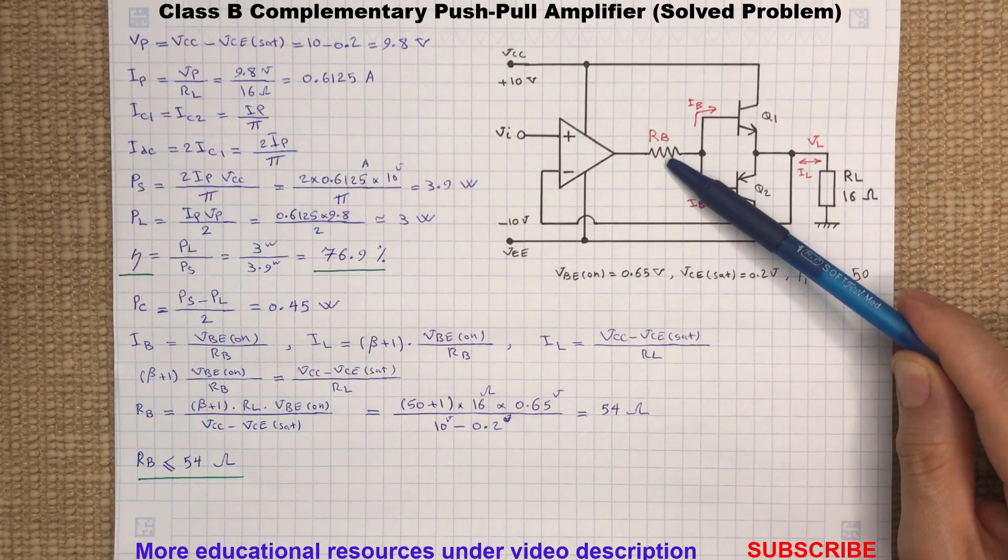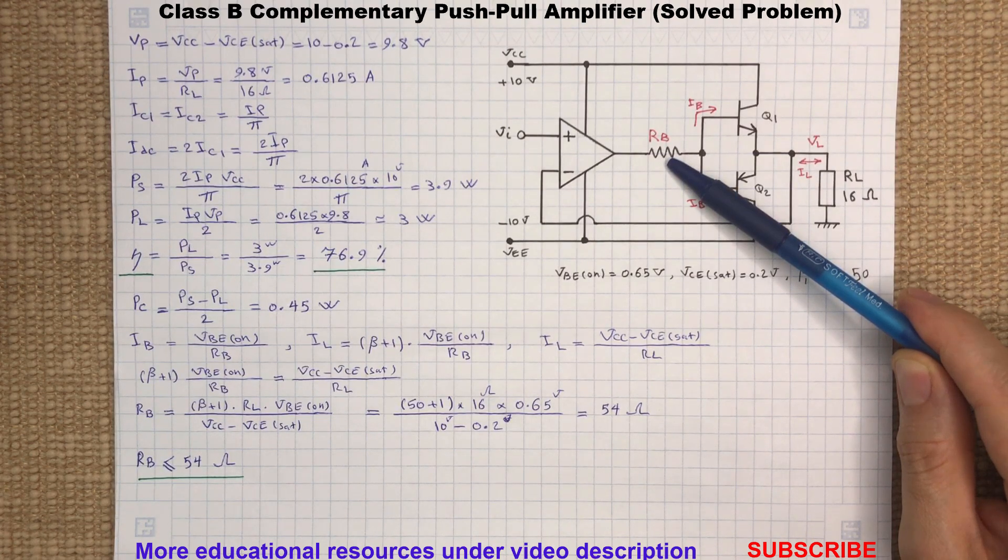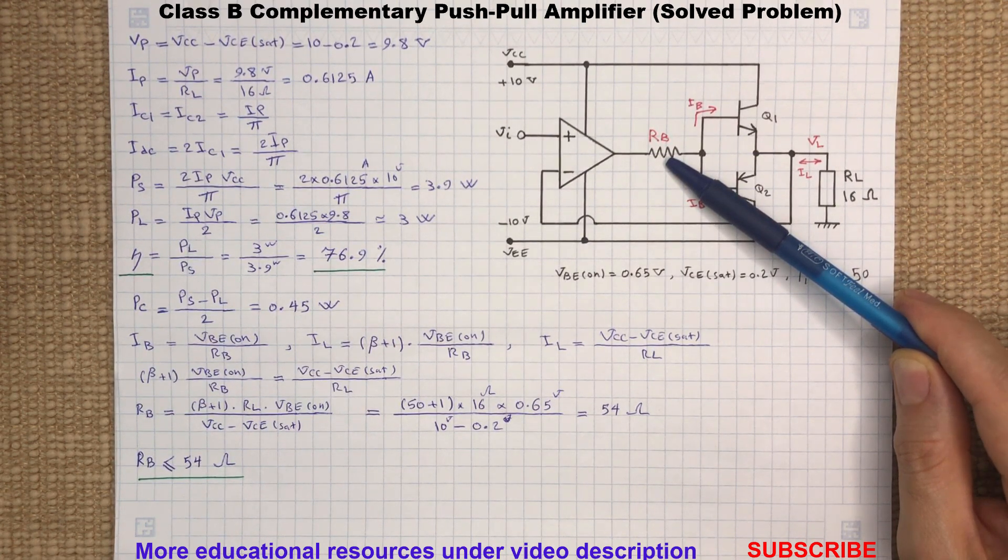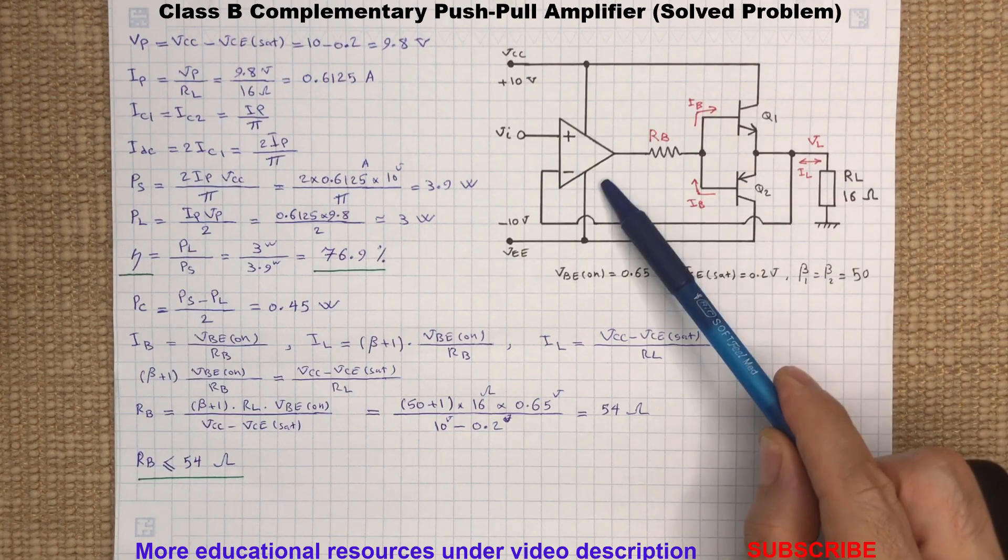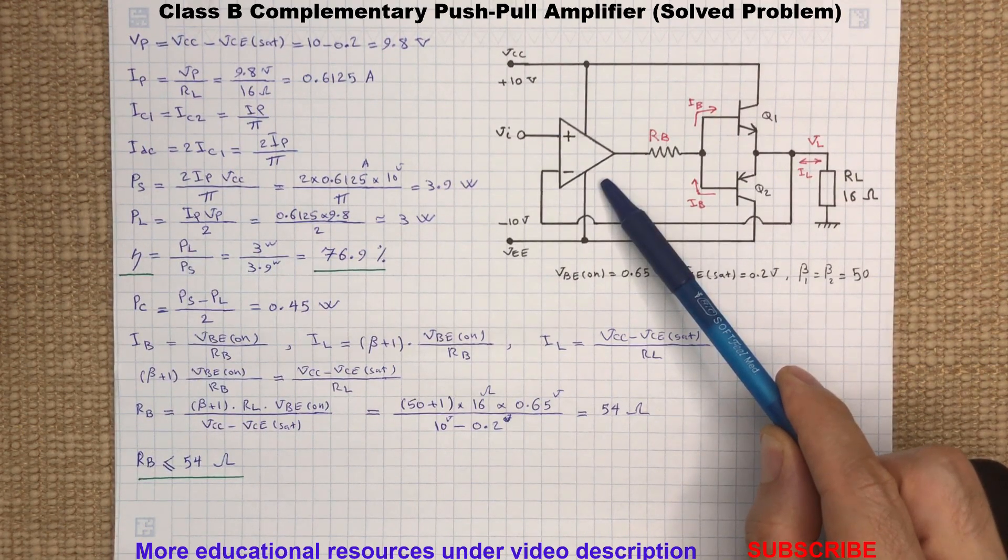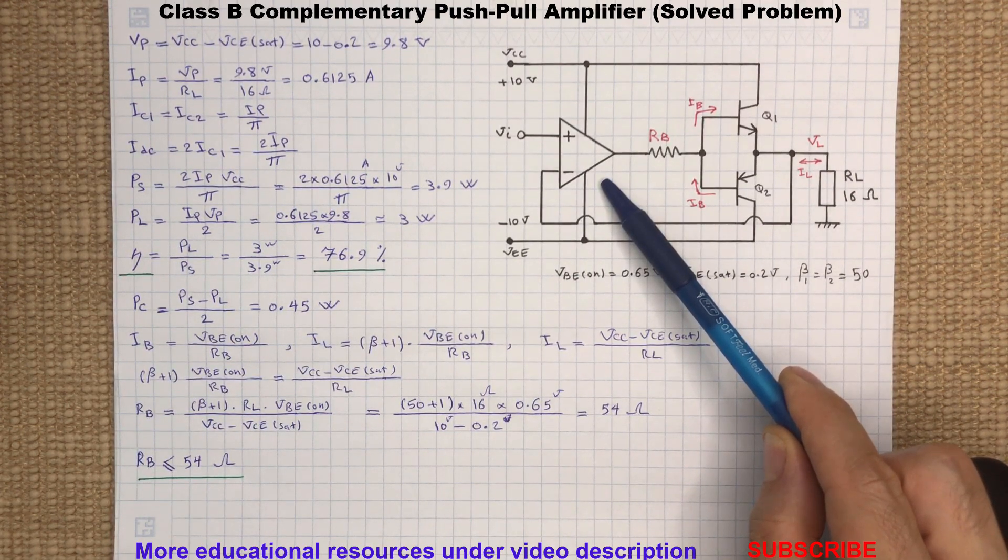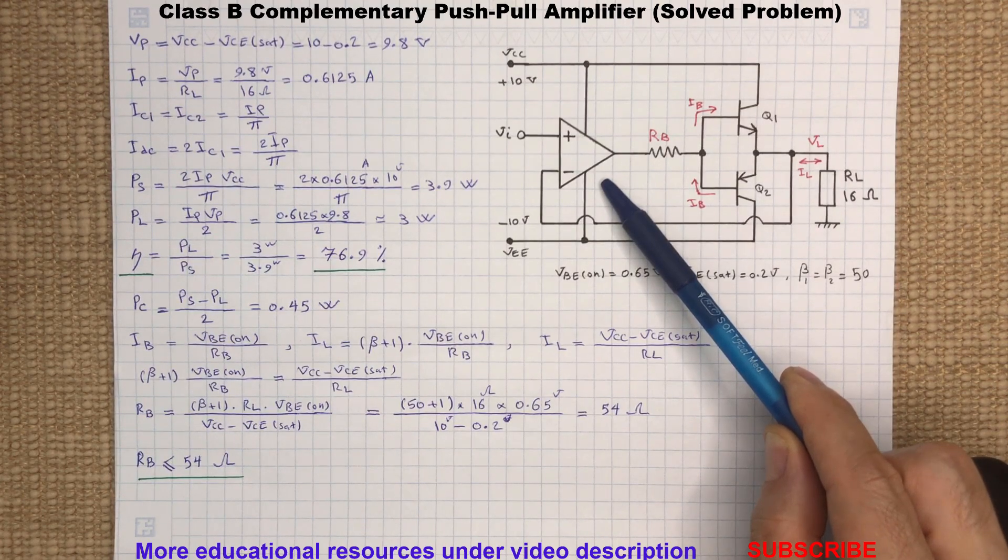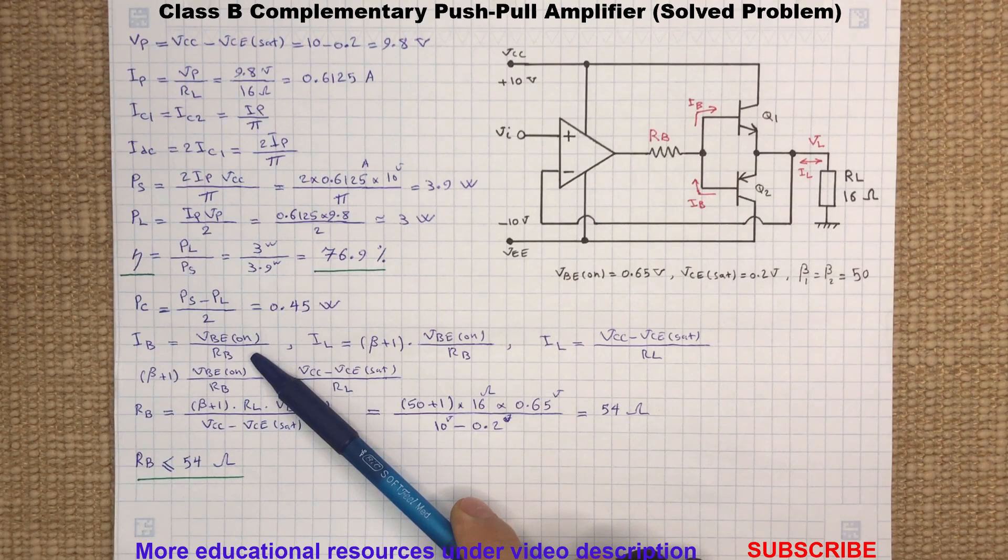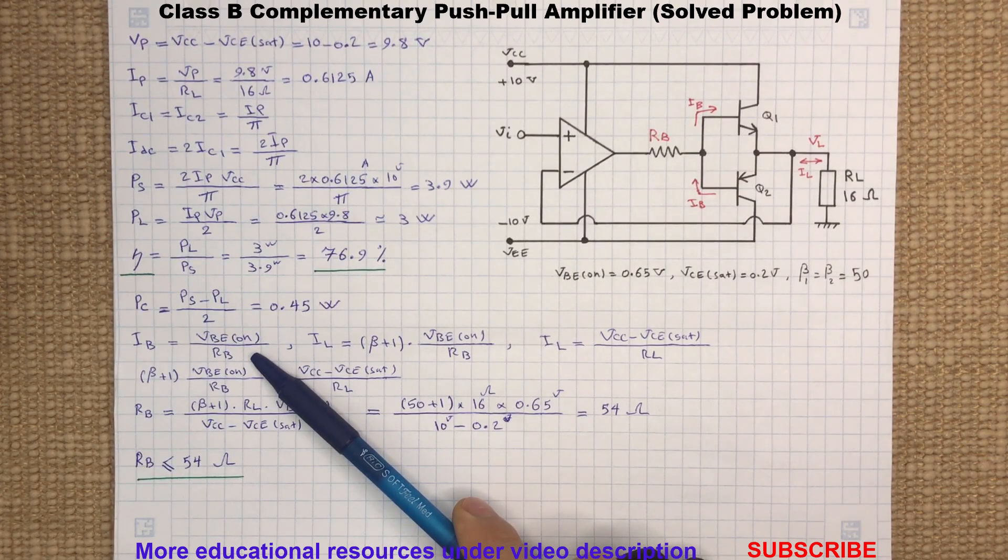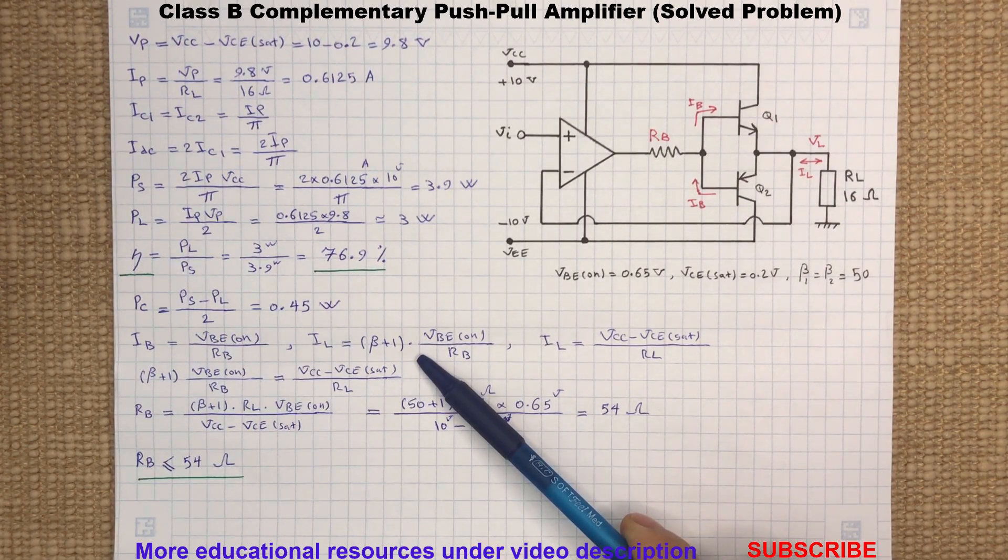Now back to the video. The resistor Rb limits the current drawn by the transistor from the op-amp output, but we need to size it in such a way which it can provide the base current necessary for the 16 ohm load at the emitter. Because here the op-amp is acting as a buffer, the voltage across the resistor Rb is the base-emitter voltage, so the base current is the base-emitter voltage divided by Rb.